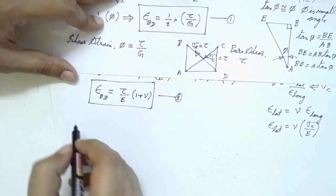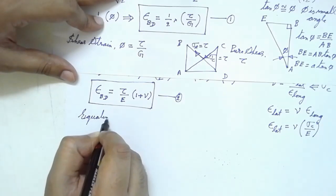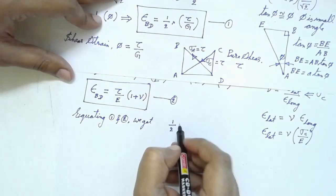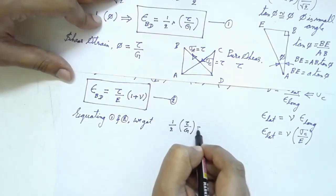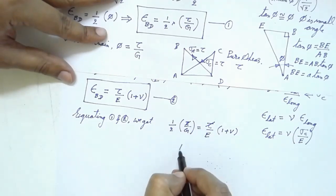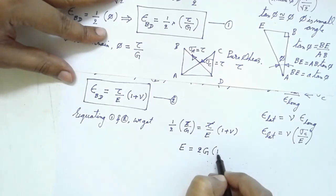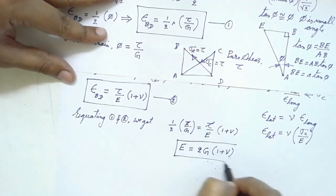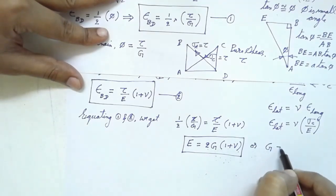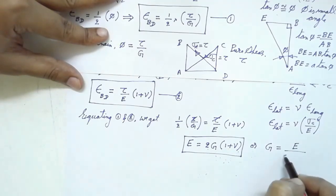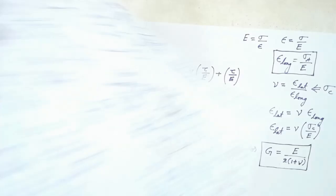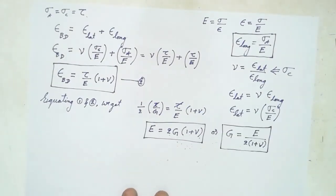Equating Equation 1 and Equation 2: (1/2) · (τ/G) = (τ/E) · (1 + μ). The τ's cancel, giving E = 2G(1 + μ). You have to remember this equation — this is the relation between Young's modulus E and shear modulus G. Alternatively, G = E / [2(1 + μ)].